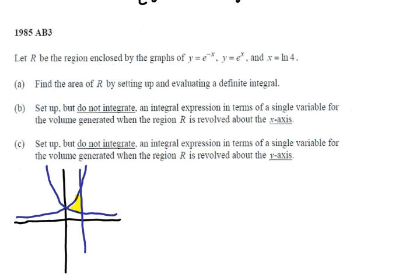Alright, so we're looking for the area there, and it's pretty clear then what the points of intersection are. We're going to go from 0, where the two functions e to the x and e to the negative x intersect, over to ln of 4. So that's not a big deal.